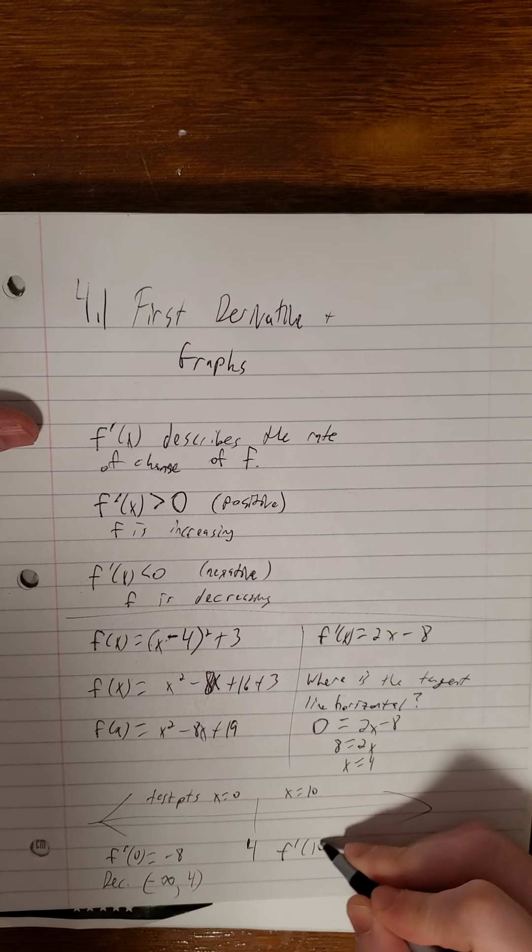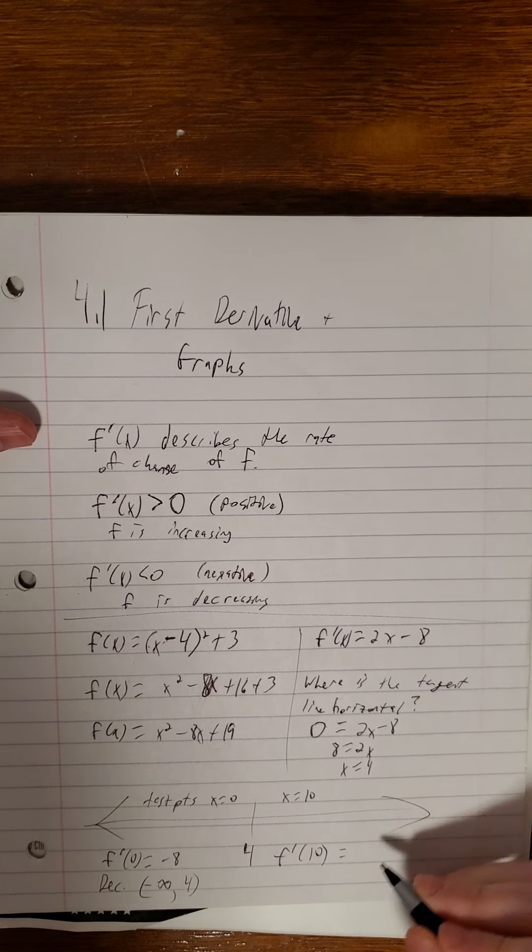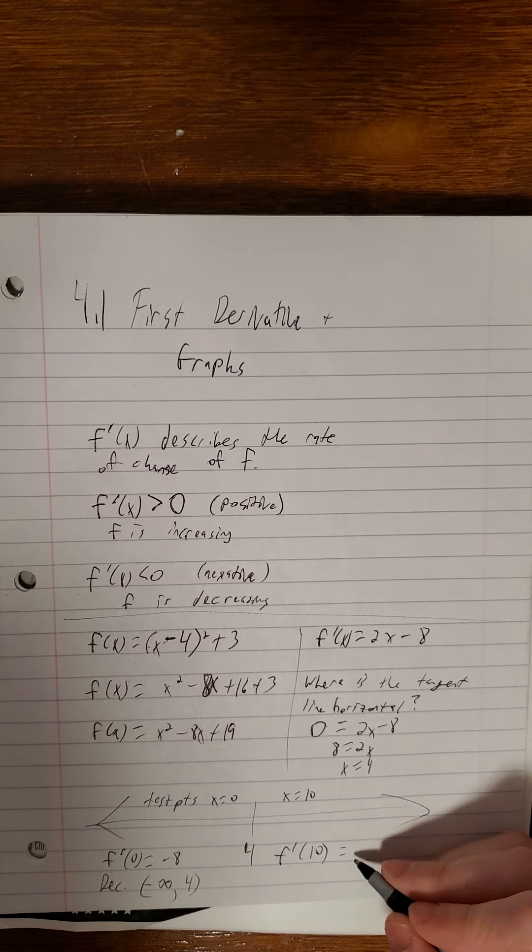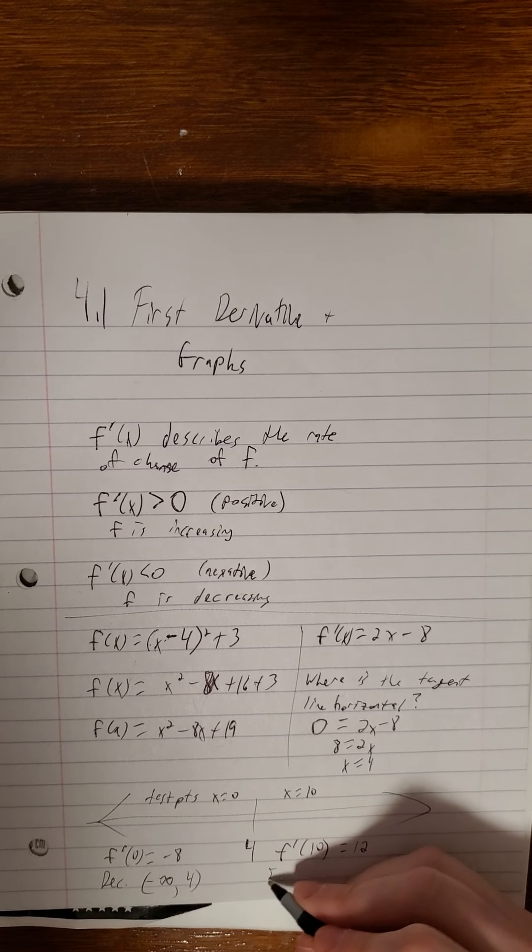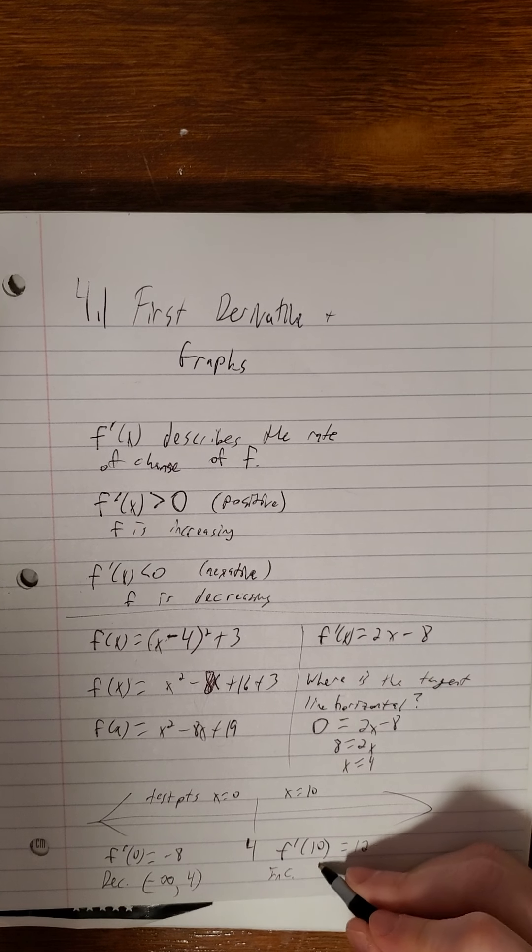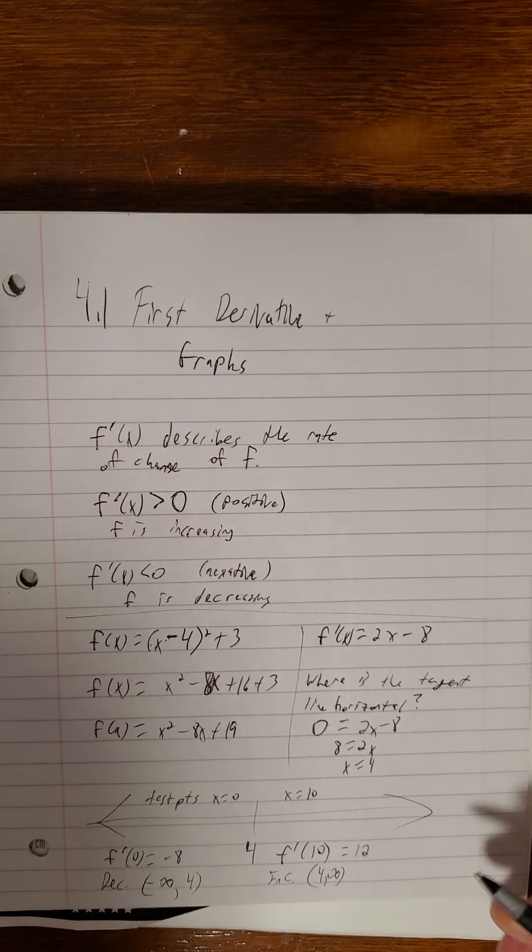f prime of 10, 20 minus 8 is 12. That is positive, so f is increasing on 4 to infinity.